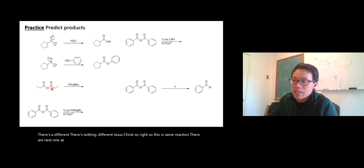Next one, acid anhydride, do exactly the same thing, less reactive, but do the same thing as acid chloride and acid bromide.